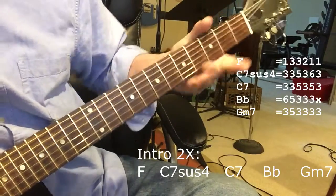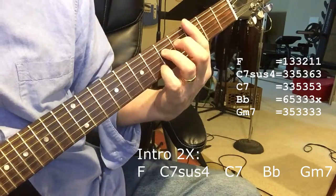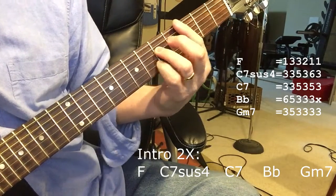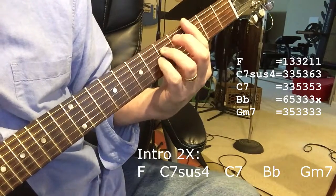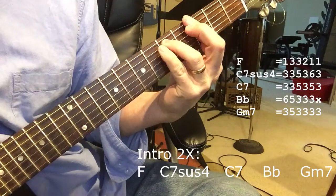And that little chord progression, you're going to play twice, and what it was was an F, a C7 suspended fourth to a C7.